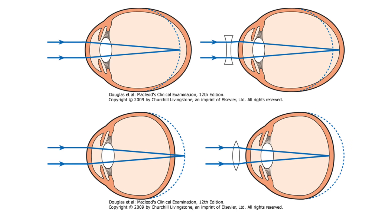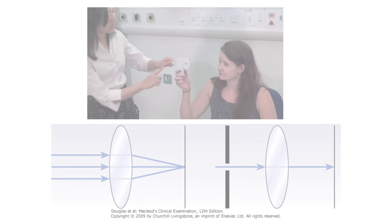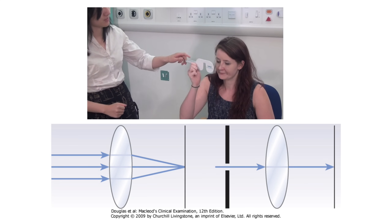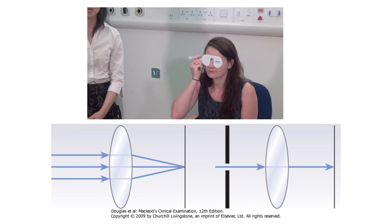If the patient's vision is not 6/6, then there's something wrong. Your patient may simply have a problem focusing, referred to as a refractive error — they're long or short-sighted — or there may be a problem with the eye itself. We can check this by asking the patient to redo the test using pinholes, which will correct for some refractive errors.